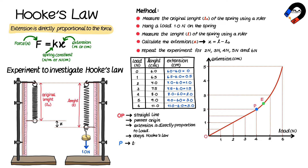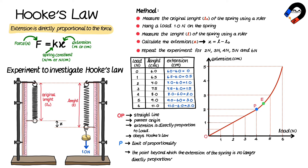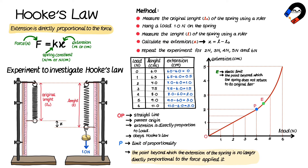Point P is called the limit of proportionality, which is the point beyond which the extension of the spring is no longer directly proportional to the force applied to it. Point E is called the elastic limit, which is the point beyond which the spring does not return to its original length when the load is removed.